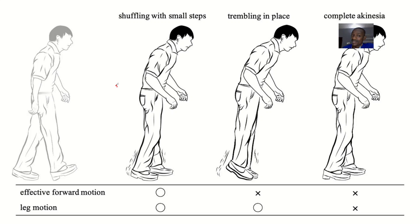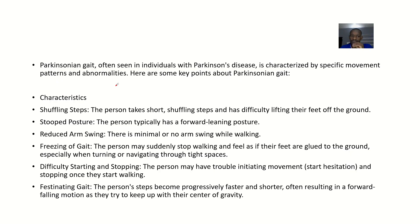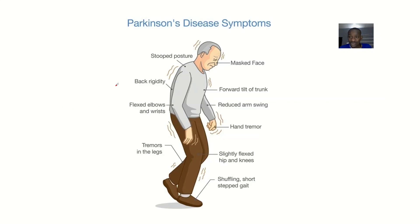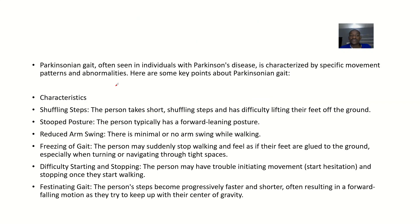For Parkinsonian gait, when they say something is shuffling, it means you are going forward and coming back, like shuffling cards. We'll cover this from the definition, the characteristics, the causes, the diagnosis, and possible treatment for this type of gait.